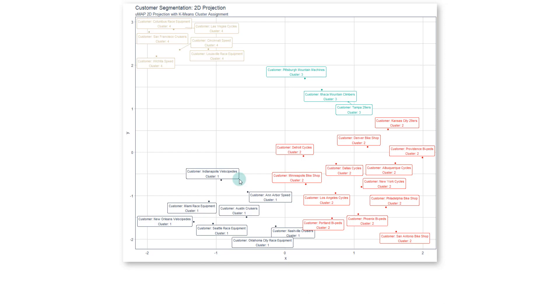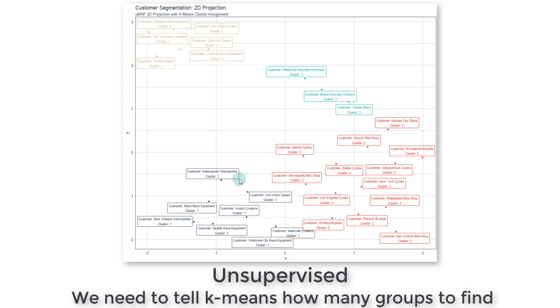So K-Means is an algorithm that is called an unsupervised algorithm. There's supervised machine learning and then there's unsupervised. Unsupervised is when you don't know exactly how many groups to label these customers into. We're kind of guessing.